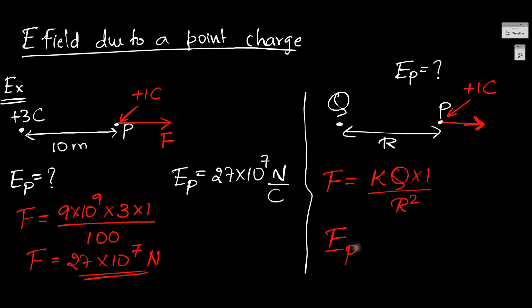So the electric field at point P is going to be k into Q divided by R squared. And there we have it. That is the expression for the electric field due to a point charge.